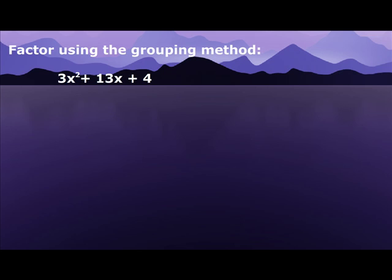Factor using the grouping method. So the first thing I do is I look at my A, which is 3, and I look at my C, which is 4, and I multiply them together.